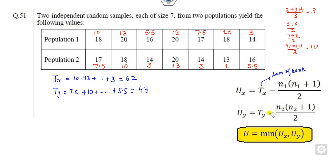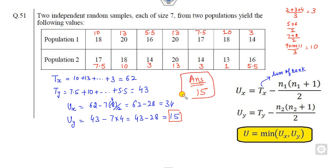So now you have the Tx, Ty you can substitute here. What is the Ux? It's 62, 7, 7, 8 divided by 2. So it's 4, 62 minus 28. It will be my 34. You can find the Uy. Uy is my 43. 7 of 8 by 2 is 4. That is 43 minus 28. It is my 15. Now what is the minimum of this? The minimum of this is my 15. So the right answer of this problem is my 15 is the correct answer.